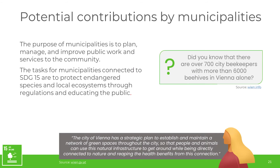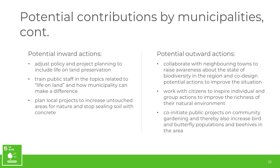What could towns, cities and villages do? They should protect endangered species and local ecosystems through regulations and policies and educate the public. An inward action could be to plan local projects to increase untouched areas for nature and stop sealing soil with concrete. An outward action could be to collaborate with neighboring towns to raise awareness about biodiversity in the region, co-design actions to improve it, or co-initiate community gardening projects to increase bird, butterfly and bee populations.